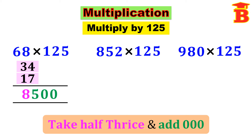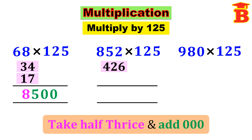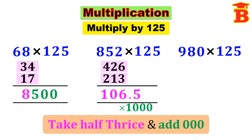Next let us multiply 852 into 125. We follow the same method: take half thrice and then add triple 0 at the back. Take half of 852, we get 426. Again taking half of 426, we get 213. Again taking half of 213, we get 106.5. Then add triple 0 — that means multiply by 1000. For 1 zero we remove 1 decimal point, and the remaining 2 zeros we add at the back. So we get 106500.